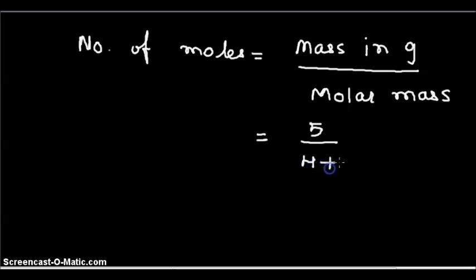Molar mass of water is sum of atomic masses of the constituents, that is two hydrogen atoms and one oxygen atom. 1 is the atomic mass of hydrogen and atomic mass of oxygen is 16.